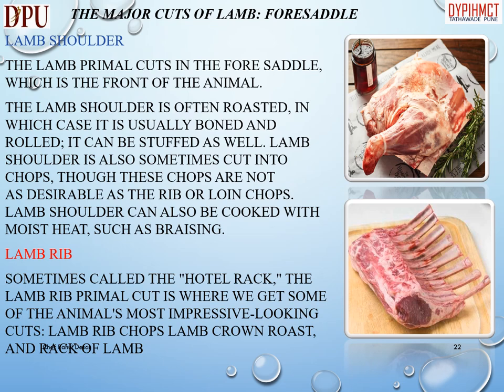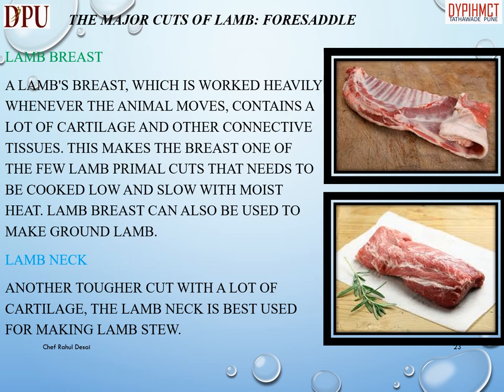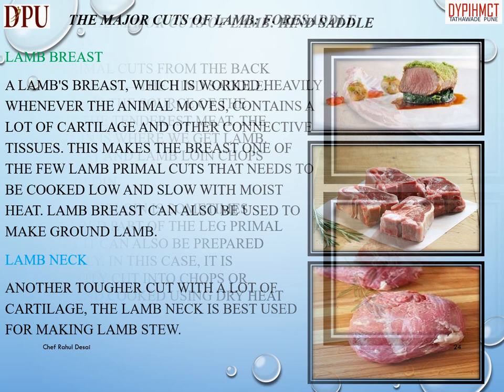Lamb rib, sometimes called the hotel rack, is where we get some of the animal's most impressive-looking cuts: lamb rib chops, lamb crown roast, and rack of lamb. Lamb breast, which is worked heavily whenever the animal moves, contains a lot of cartilage and other connective tissues. This makes the breast one of the few lamb primal cuts that needs to be cooked low and slow with moist heat. Lamb breast can also be used to make ground lamb. Lamb neck is another tougher cut with a lot of cartilage, best used for making lamb stew.